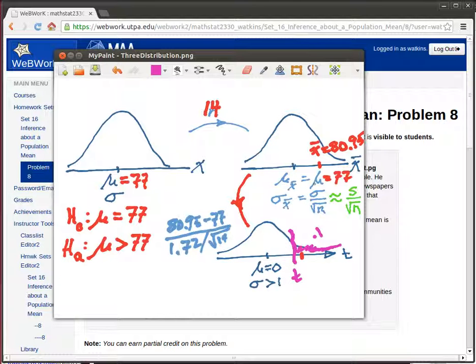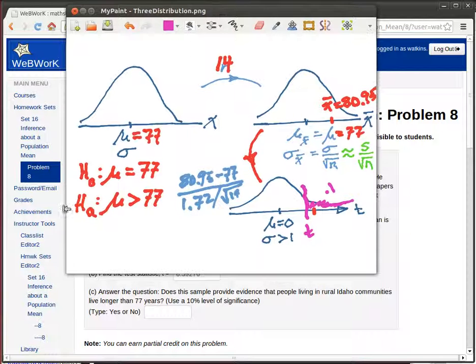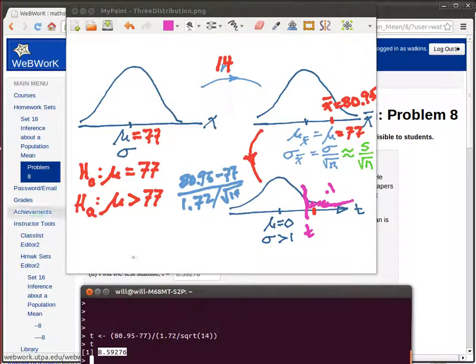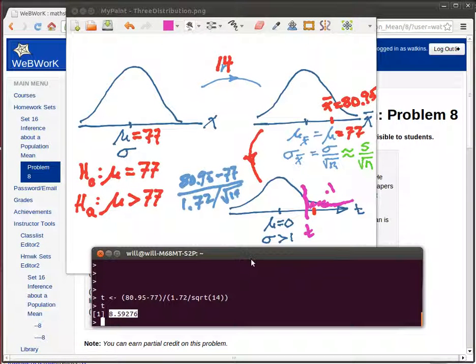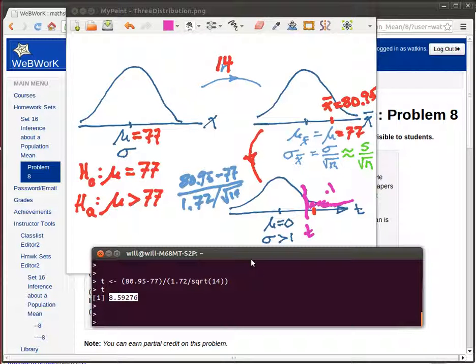And that's going to be easy to find. That's where I'm going to use R. So what I need to find is Qt of 1 minus 0.1. And the degrees of freedom here is going to be equal to 13. It's always one less than the sample size.